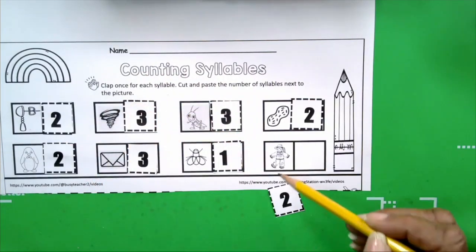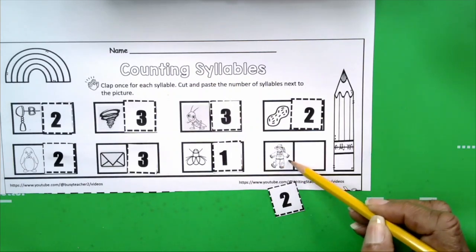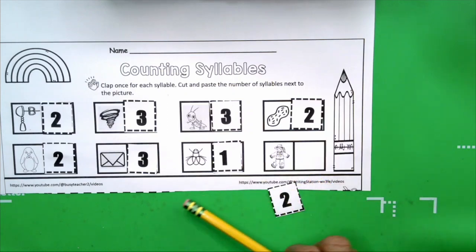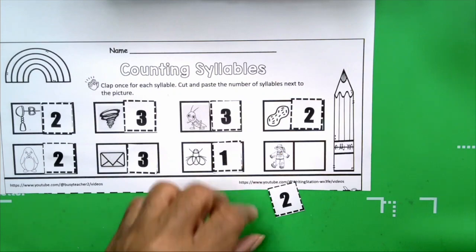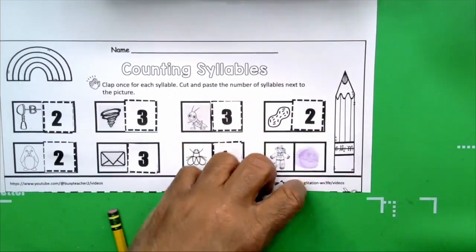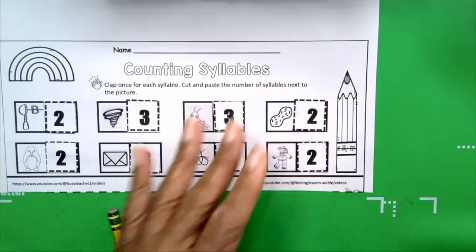Okay. Now, who can guess what this is? I heard someone in the back say, it's a scarecrow. You're right. Get your hands ready. Scare crow. How many claps did you hear? Two. How many syllables are in the word scarecrow? Two. Very good. You guys are so smart.